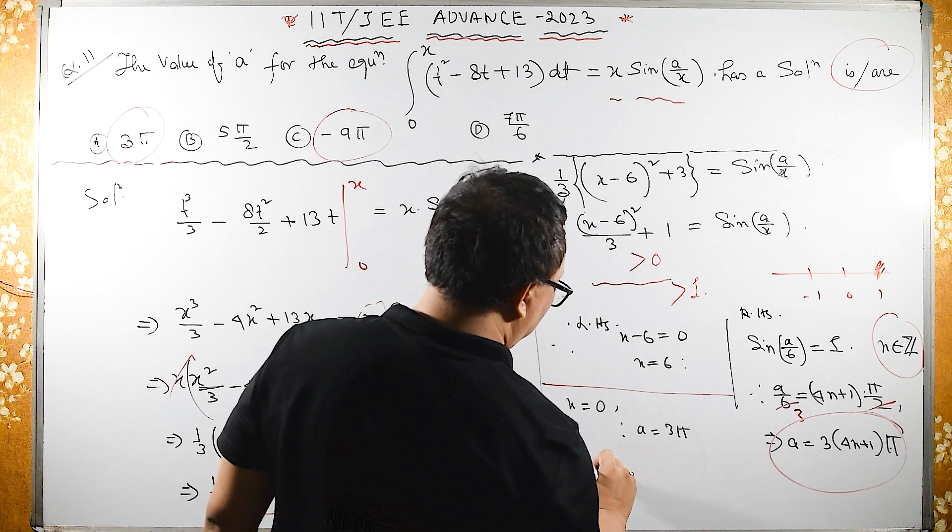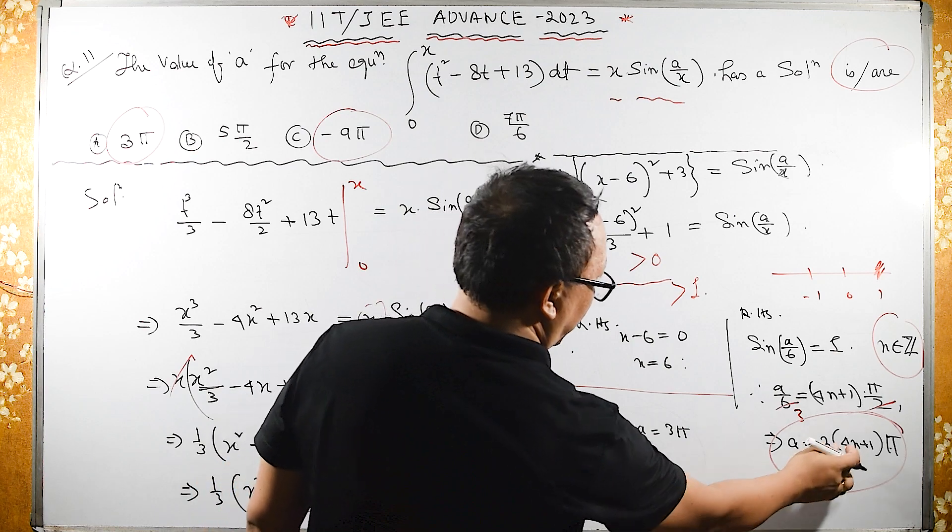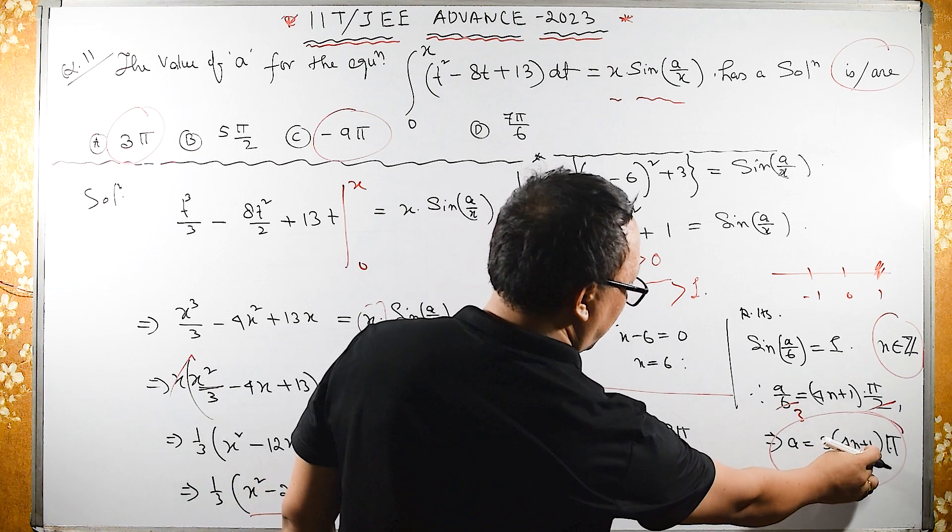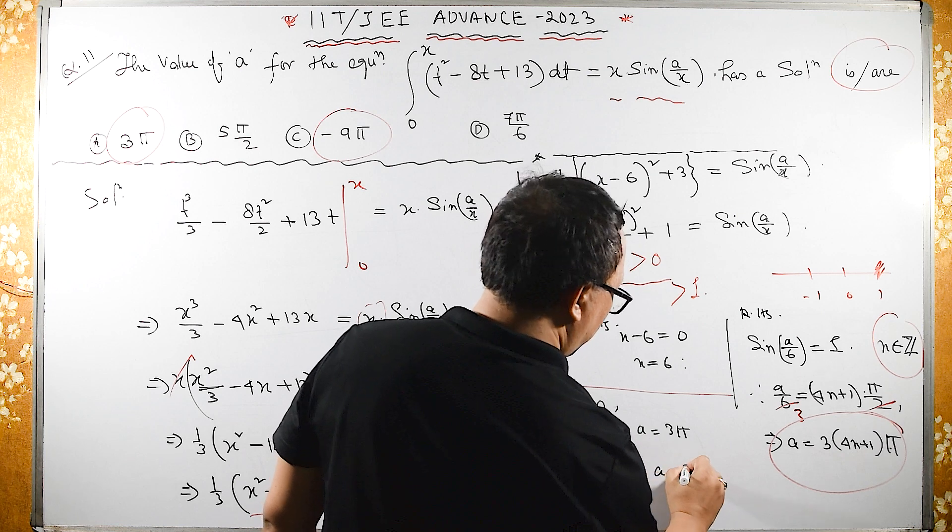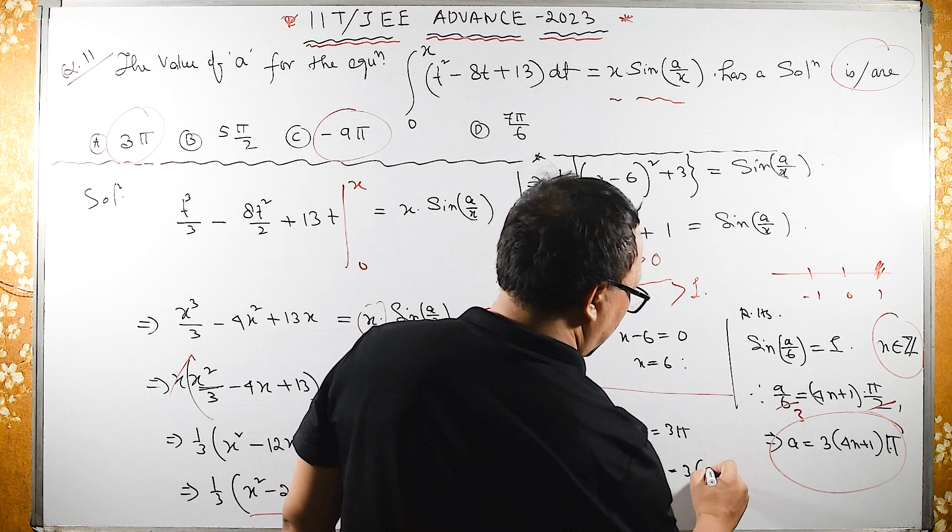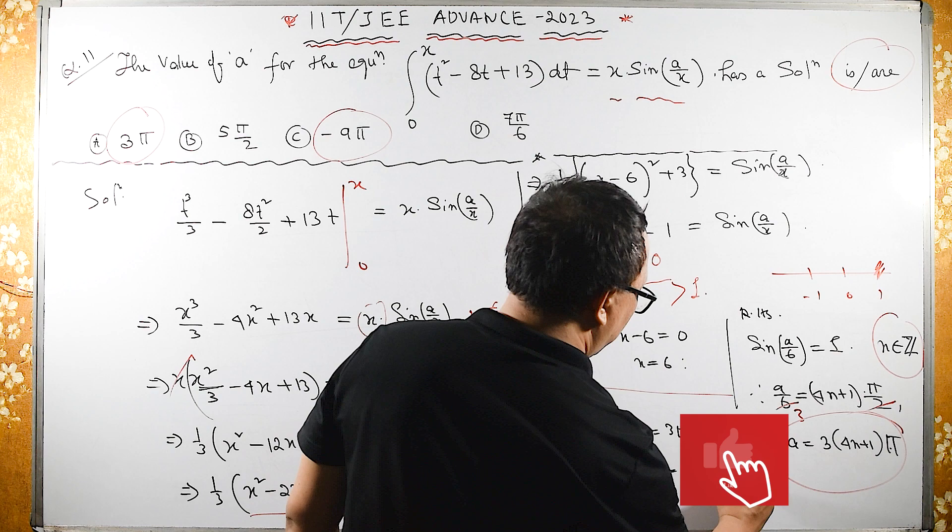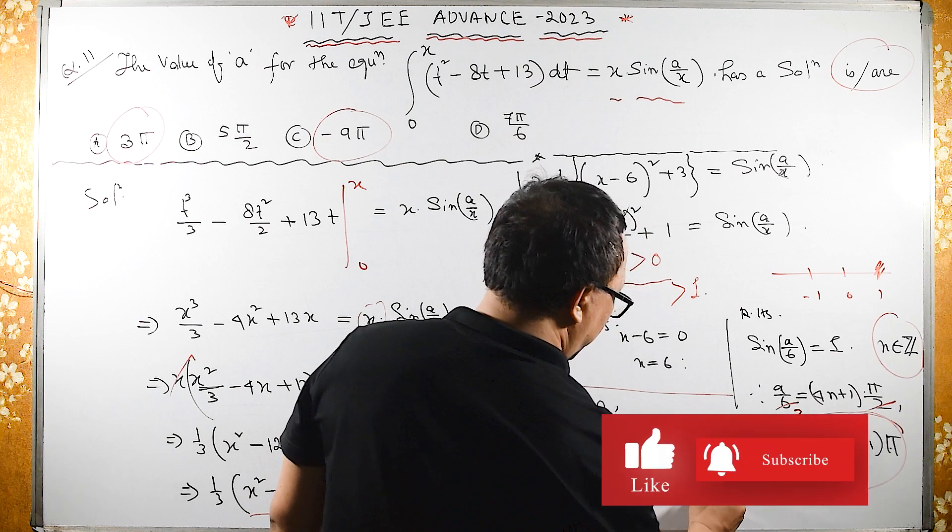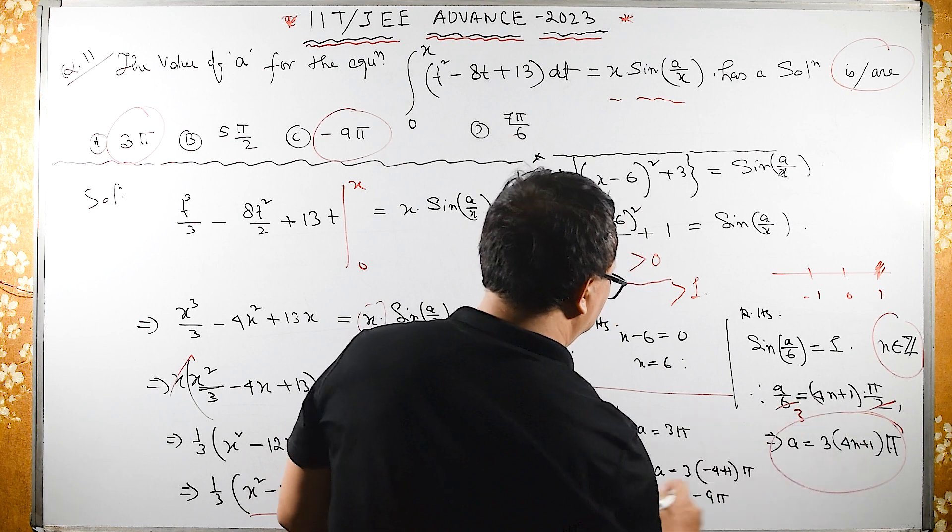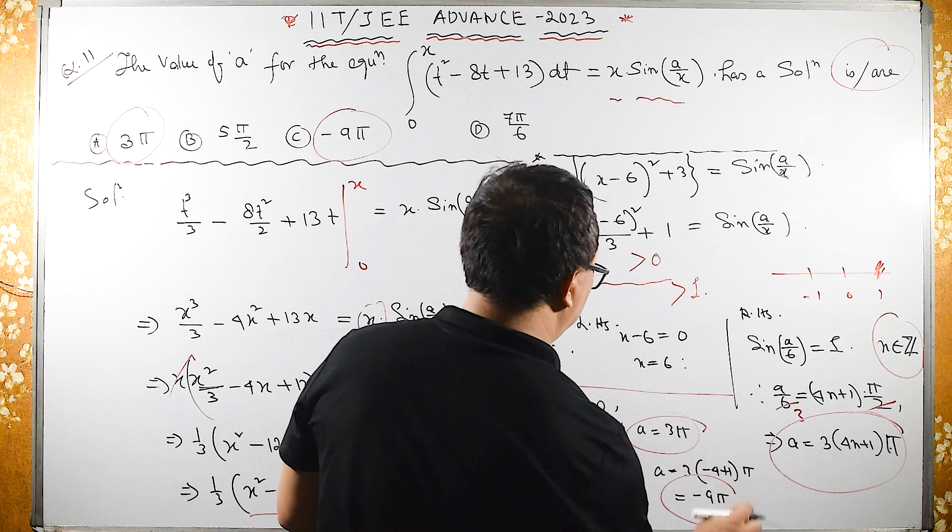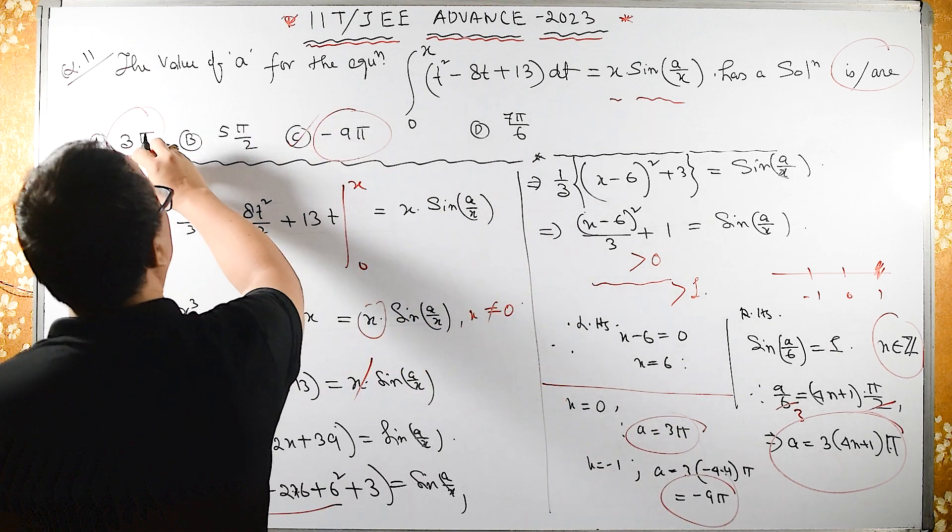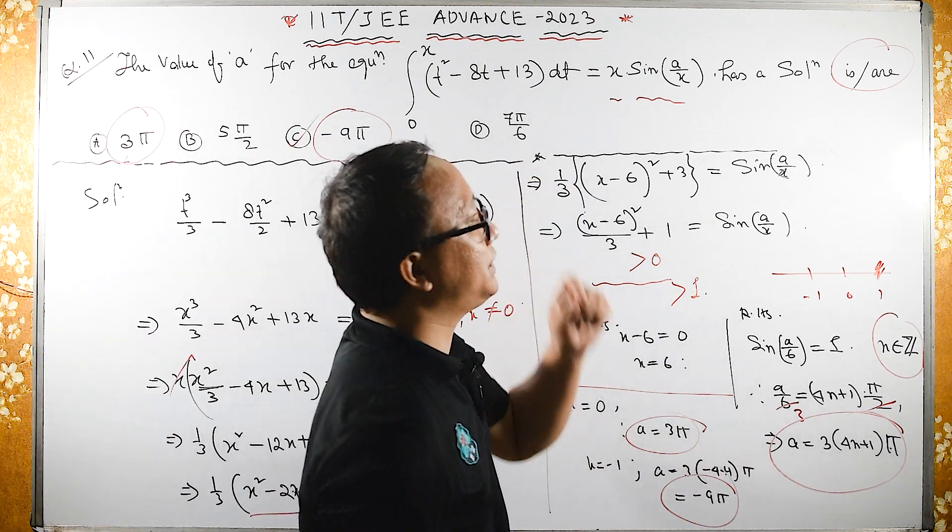When N equals -1, let us see. When N equals -1, then A equals 3·(-4 + 1)·π, which means -9π. So these two are the possible values for this equation.